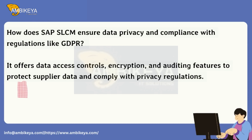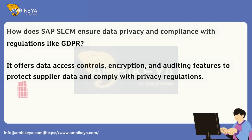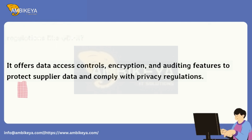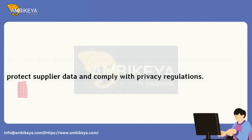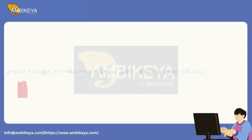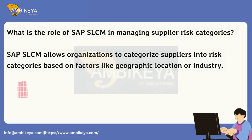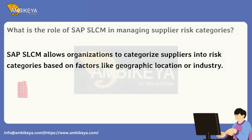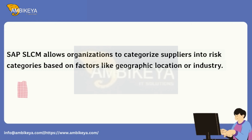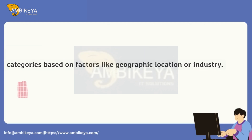How does SAP SLCM ensure data privacy and compliance with regulations like GDPR? It offers data access controls, encryption, and auditing features to protect supplier data and comply with privacy regulations. What is the role of SAP SLCM in managing supplier risk categories? SAP SLCM allows organizations to categorize suppliers into risk categories based on factors like geographic location or industry.